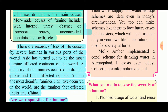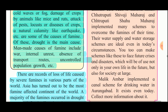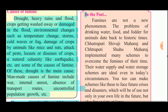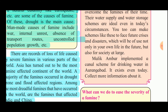India and China have large populations, so the consumption of food grains is high compared to the rate at which food grains are grown, making famines more common there. Famines are not a new phenomenon. The problems of drinking water, food, and fodder for animals date back to historic times. Chhatrapati Shivaji Maharaj and Chhatrapati Shahu Maharaj implemented many schemes to overcome the famines of their time, and their water supply and storage schemes are ideal even today.